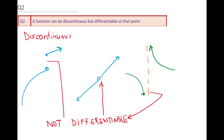The derivative does not exist at those points. So the statement — a function can be discontinuous but differentiable at that point — is false. If the function is differentiable, it has to be continuous. So differentiability requires continuity, and therefore this statement is false.